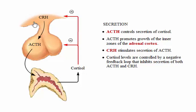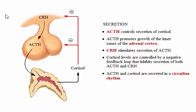Despite the negative feedback system, blood levels of ACTH and cortisol vary in a circadian rhythm. This daily variability results from the changing sensitivity of the CRH-secreting cells to cortisol. The circadian rhythm may allow the nervous and endocrine systems to anticipate the need for cortisol that is associated with daily activity.